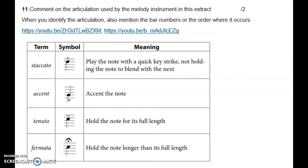For two marks, you had to comment on the articulation used by the melody instrument. Articulation is all about staccatos, accents, tenutos, fermatas, and legato playing. When you identify the articulation, also mention bar numbers if you can, or the order — so in this case, whether you heard staccato first or legato first, and then what follows.